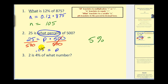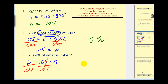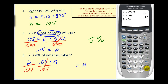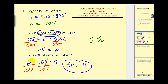Number three: two is four percent of what number? We write two equals four percent, which is point zero four, of n. To solve for n, we divide both sides by point zero four, giving us n equals two divided by point zero four, which equals fifty. This makes sense — two is four percent of fifty, a small percentage of a larger number. Going back, twenty-five is five percent of five hundred, and one hundred five is a small percent of eight hundred seventy-five.